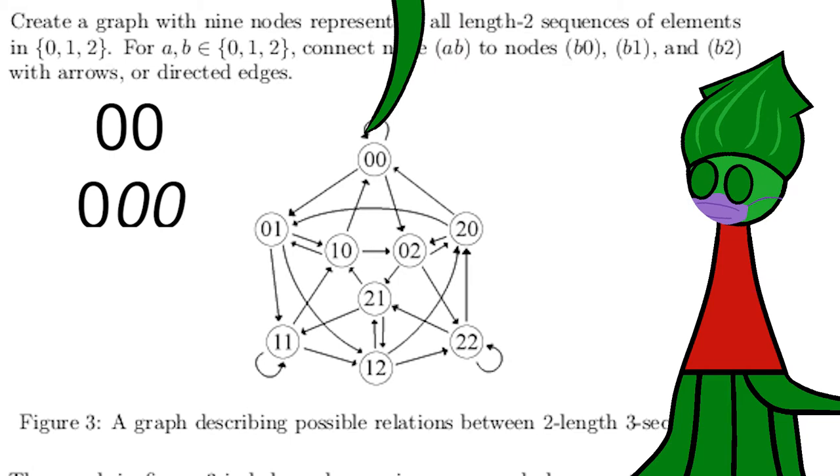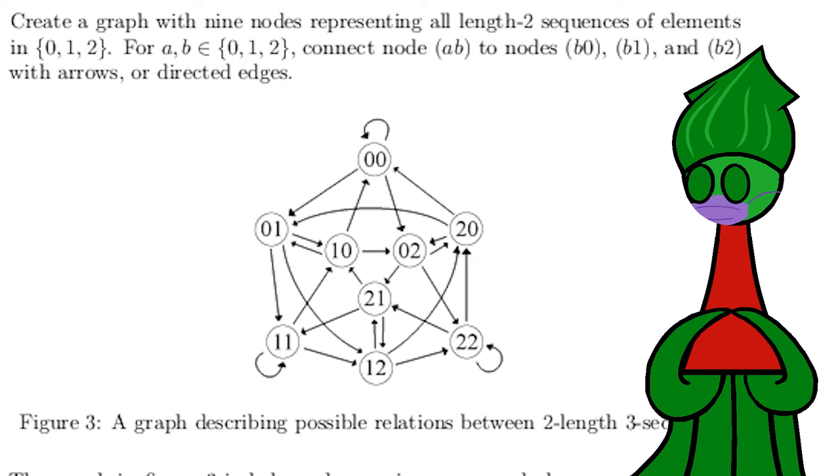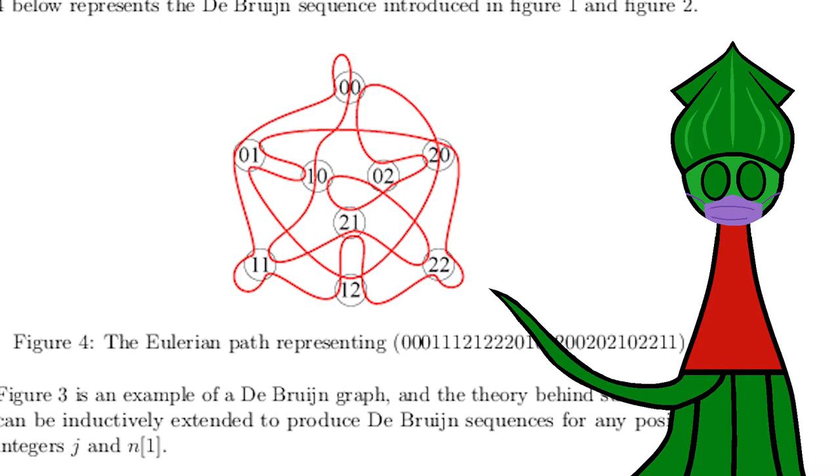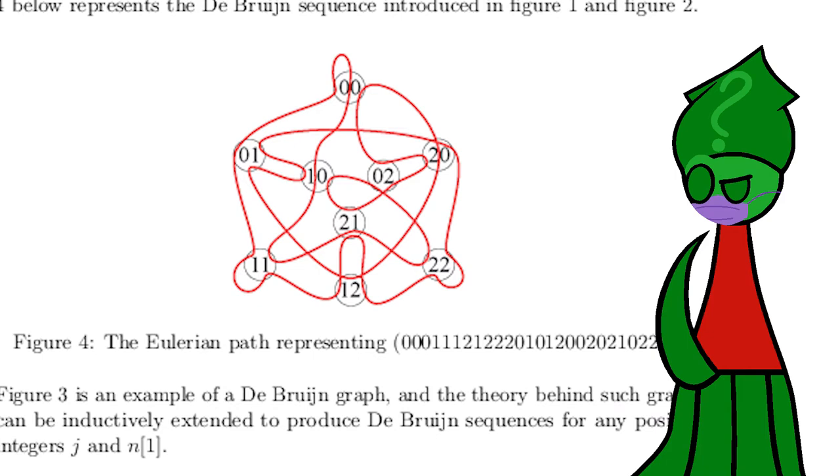We can make a Debron sequence out of this graph if we can make a cycle starting and ending at the same vertex covering every single edge precisely once. This is a Eulerian path. Euler was another mathematician, lots of stuff is named after him. So this Eulerian path is related to this Debron sequence of order three on a three-sized alphabet.